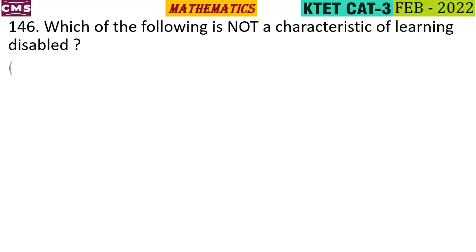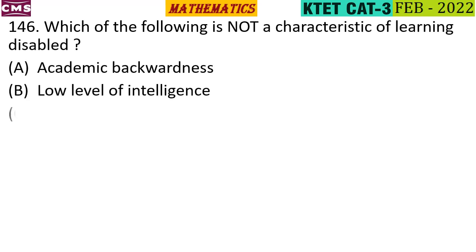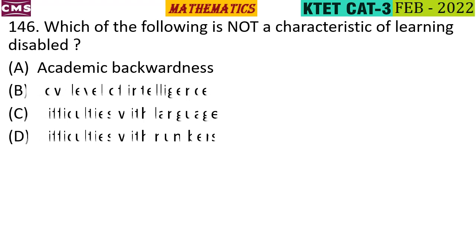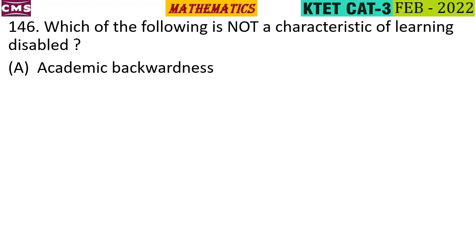Which of the following is not a characteristic of learning disability? The options are: academic backwardness, low level intelligence, difficulties with language, and difficulties with numbers. The correct answer is option A — academic backwardness. It is not a characteristic of learning disability.